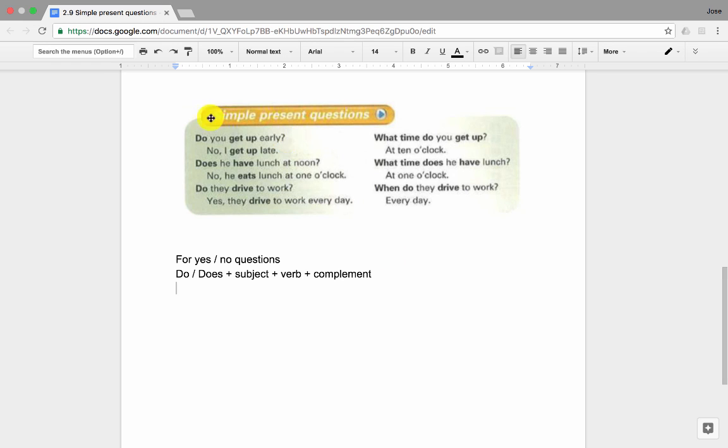We're going to take the first example. Do you get up early? Do is the auxiliary verb. You is the subject. Get up is the verb. And early is the complement.